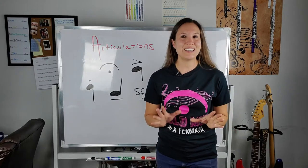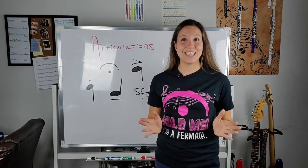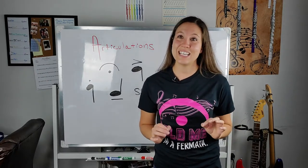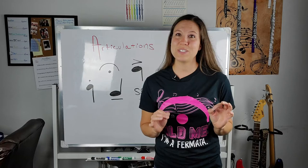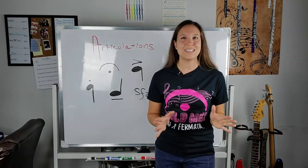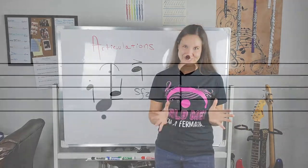So the symbols that we're learning today are called articulation. Articulation tells us more specifically how the composer wants us to play the note.